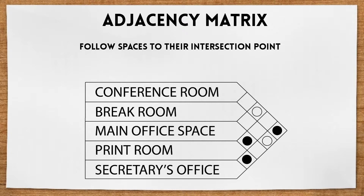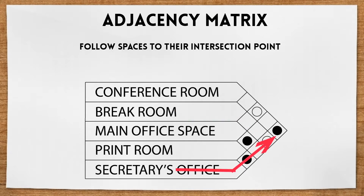For example, the break room and the secretary's office meet here, and the open dot indicates they should have some relationship but not be adjacent to one another. Meanwhile, the secretary's office and the conference room have a shaded dot, meaning they should be adjacent to one another.